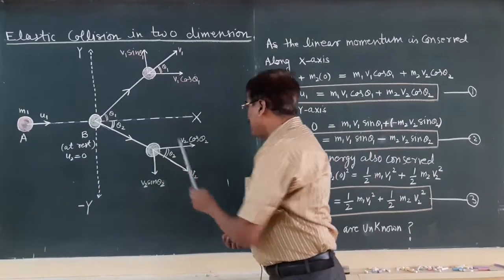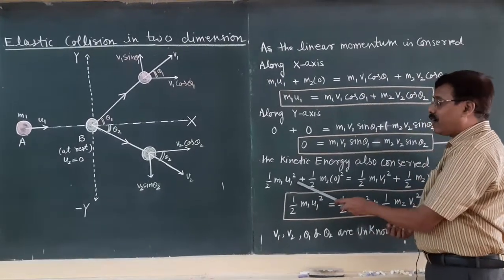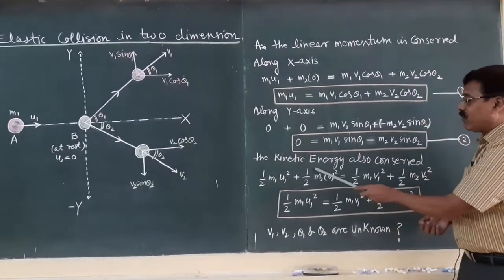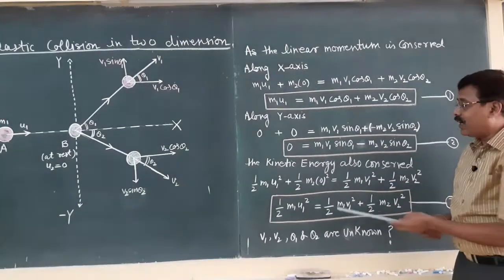For first object it will be half m1 u1 square and for second object it will be half m2 0 square because the object is in the rest position.